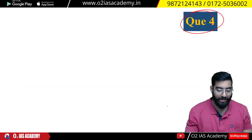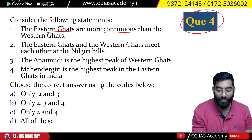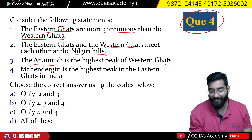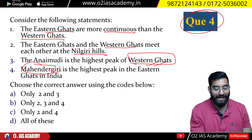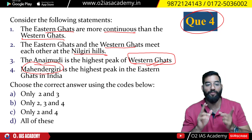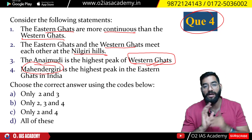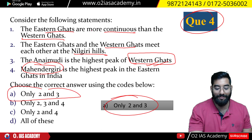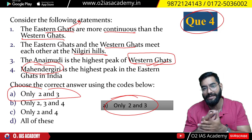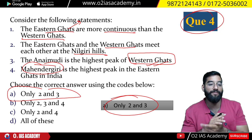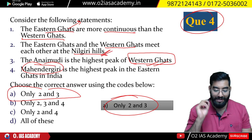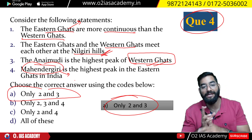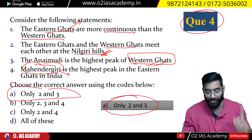Question number 4: Consider the following statements — Eastern Ghats are more continuous than Western Ghats; at the meeting point of Eastern and Western Ghats are the Nilgiris; Anamudi is the highest peak of Western Ghats; and Mahendragiri is the highest peak of Eastern Ghats. Identify the correct or incorrect statements.